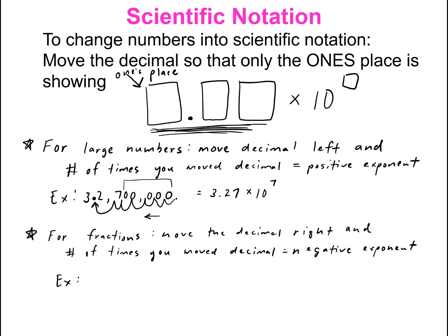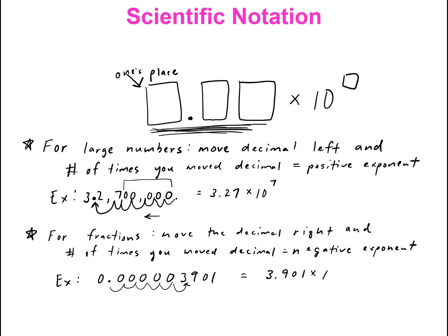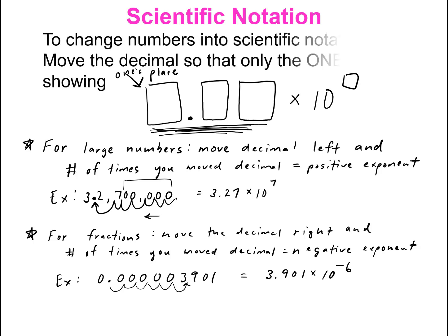Here's a quick example of that. If you have the number 0.00003901 and we want to write this in scientific notation, we need to move the decimal all the way over: one, two, three, four, five, six times to the right to get just the ones place showing. So it becomes 3.901 times 10 to the negative six, because we move to the right and your exponent becomes negative. That was just a quick thing on scientific notation.